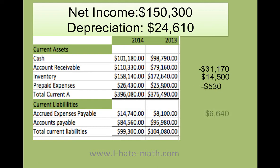Now let's talk about the liabilities. Accrued expenses payable went from 8,000 to 14,000. When you have accrued expenses payable going up, that tells me that instead of paying the people, you're actually keeping the money with you — you are not paying your payable, so you're keeping the money in your pocket. Now the same thing with accounts payable. Your accounts payable, what you owe to people, was 95,000, but in 2014 you actually have 84,000 — that means that you're actually paying people, so this is a negative.